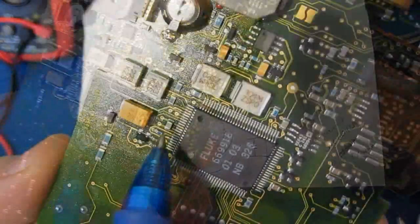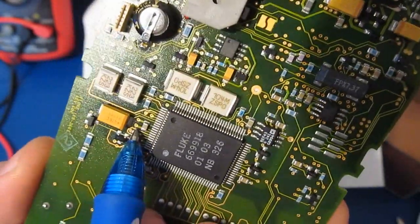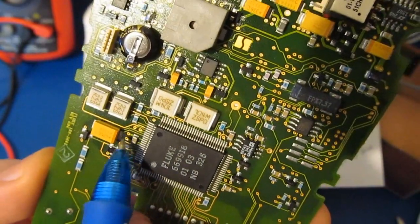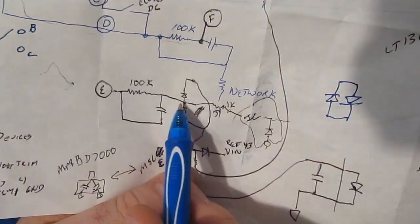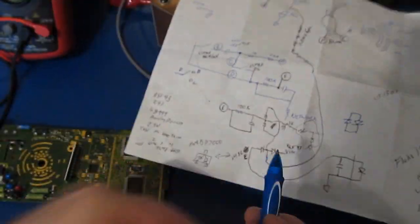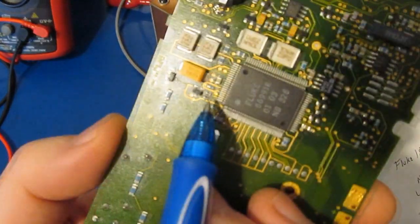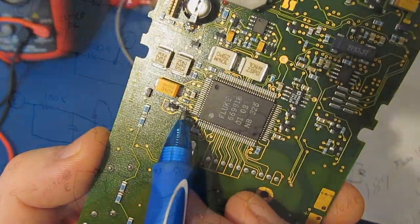That's this small capacitor here, the side going off to the common point. You can also see the center point of this going through a 1k ohm resistor, and that goes into the IC. That resistor is this one right here to the right.